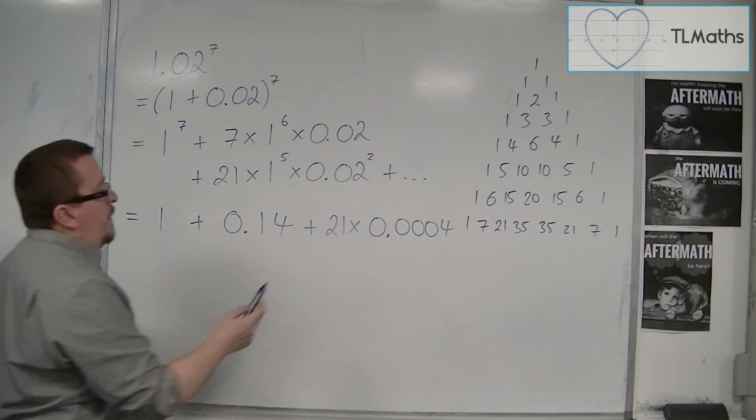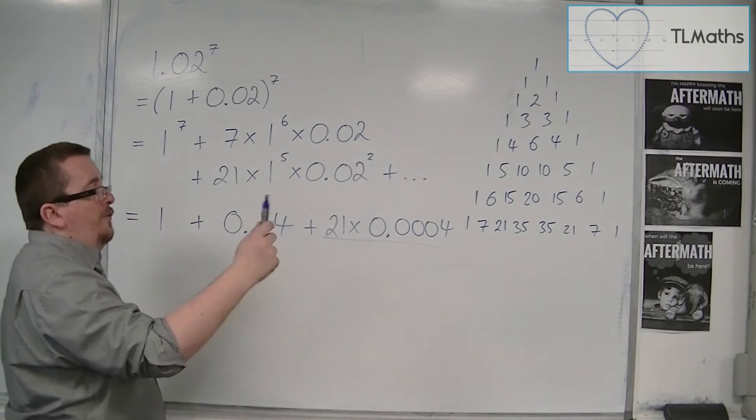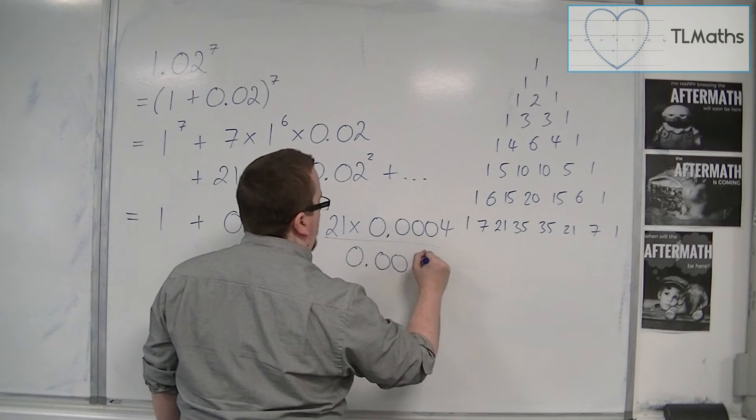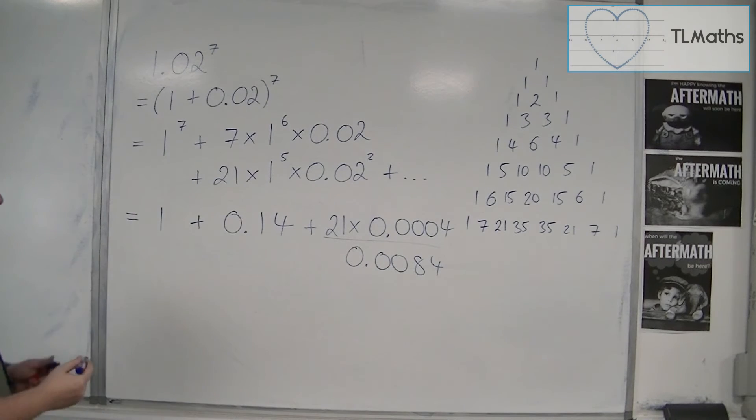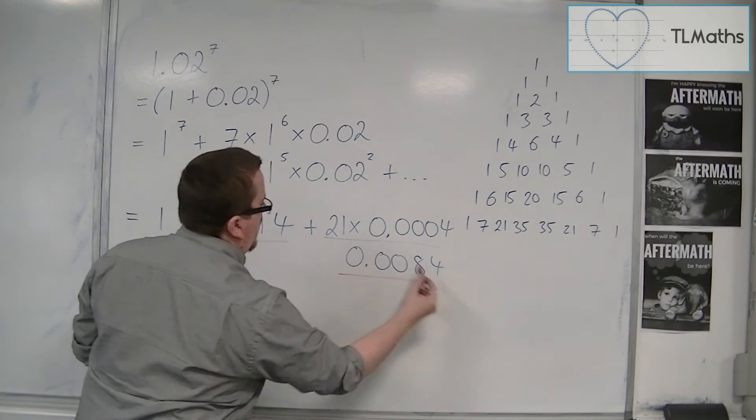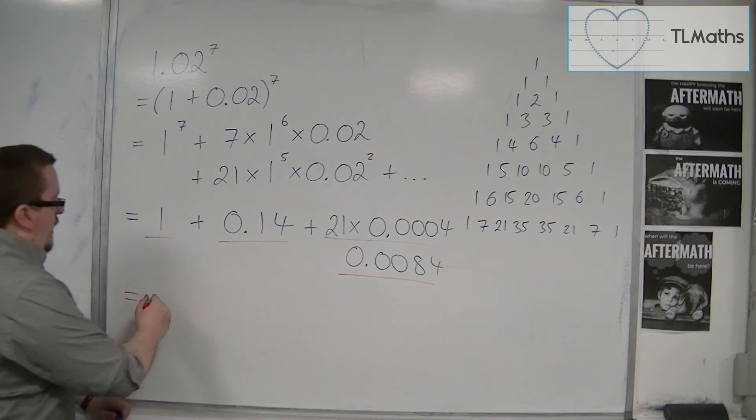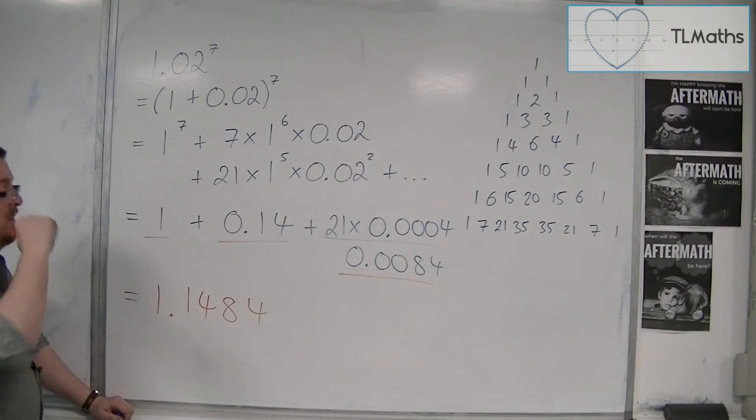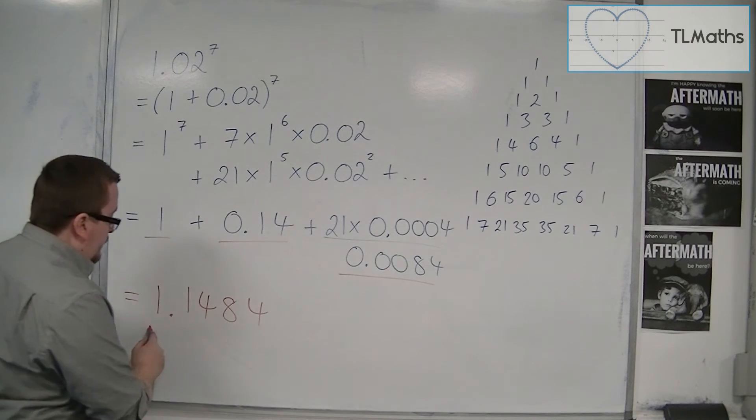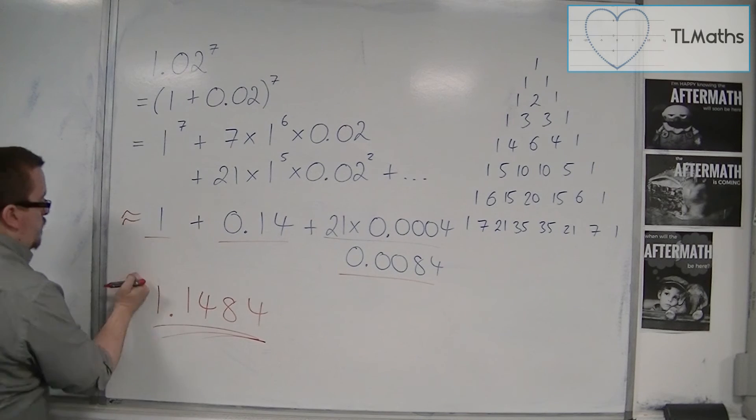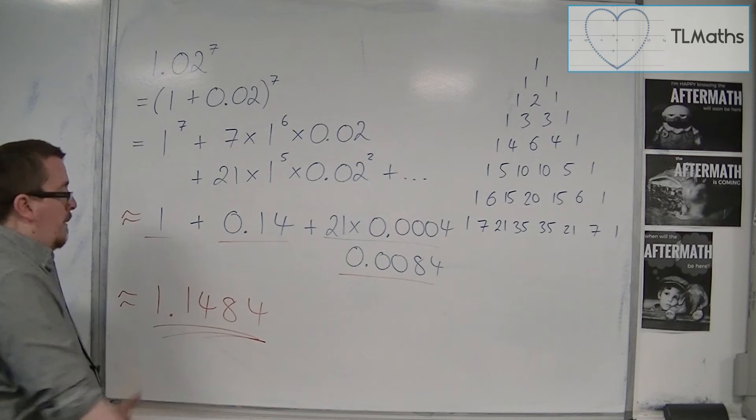And 21 times 0.0004 is 0.0084. So if I add these three elements together, the 1, the 0.14, and the 0.0084, I get 1.1484. So to four decimal places, this is my expansion. If I put this as approximately equal to, then that is a relatively good approximation.